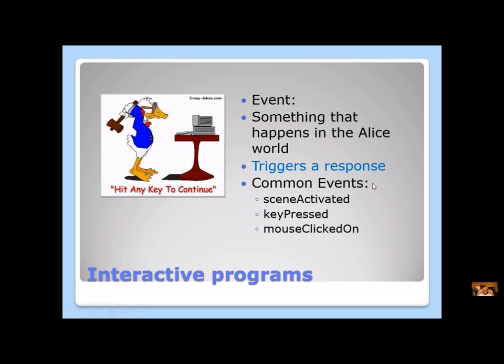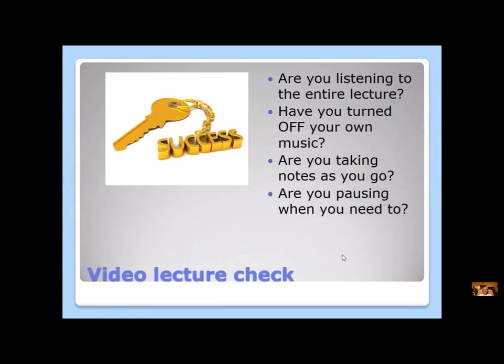Here are three common events that happen in Alice: scene activated, key pressed, and mouse clicked on. We're going to talk about these three events in our first program. But first, let's do a video lecture check from lesson one. Are you listening to the entire lecture? Have you turned off your own music? Are you taking notes as you go? Are you pausing when you need to? Let's remember those keys to success.